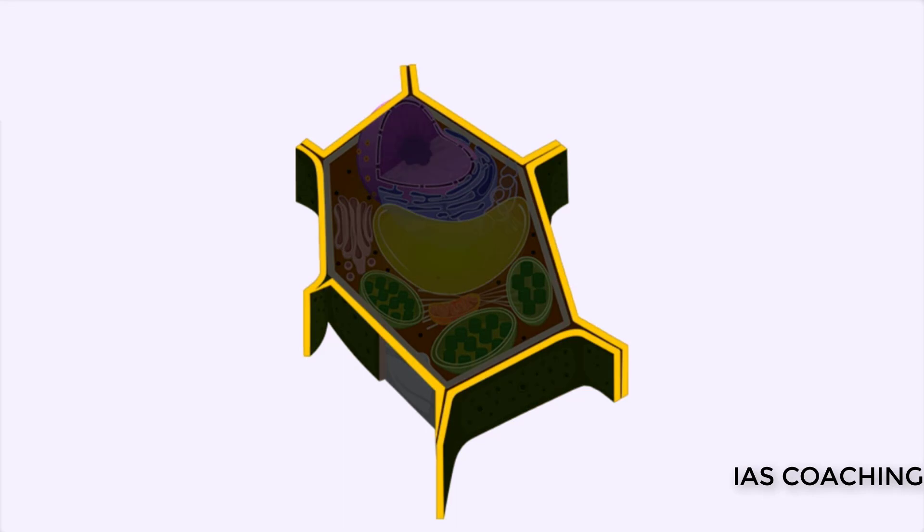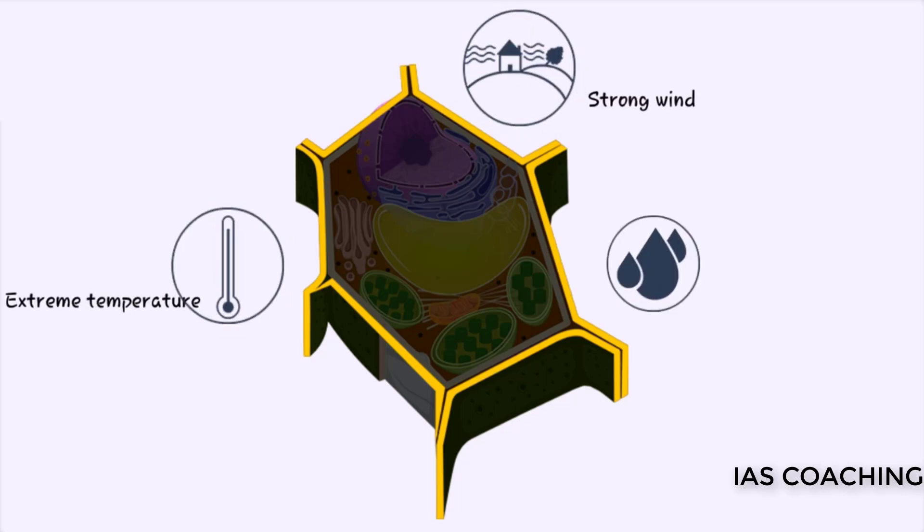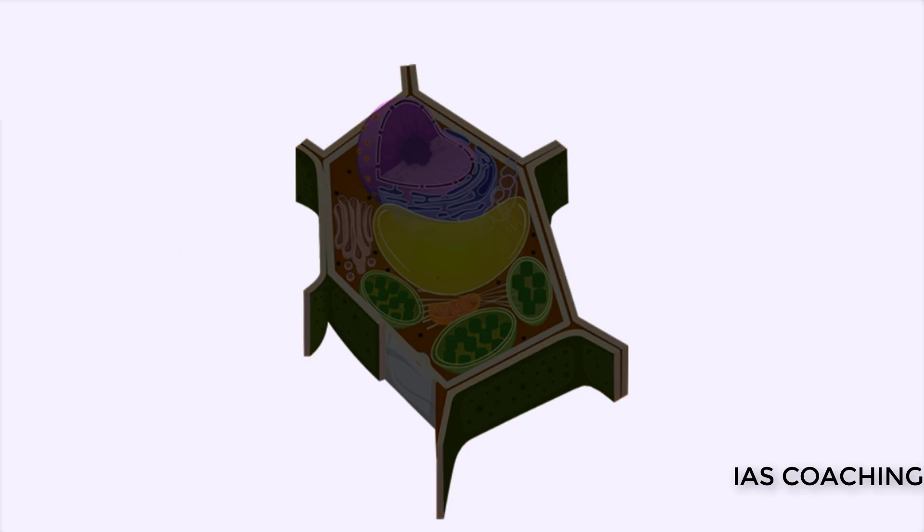You saw that plant cells have cell walls while animal cells don't. A cell wall protects it from external factors like extreme temperature, strong wind or atmospheric moisture and helps to keep the cell firm. As plants are fixed and cannot move to avoid adverse conditions, their cells need more protection, hence the cell wall.